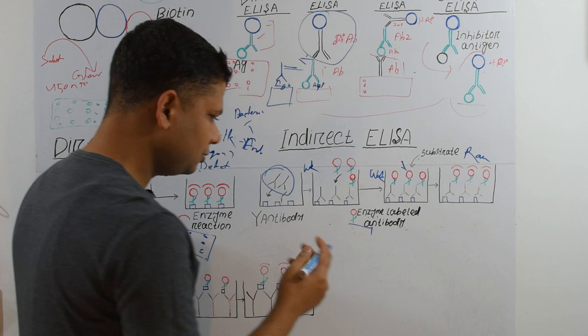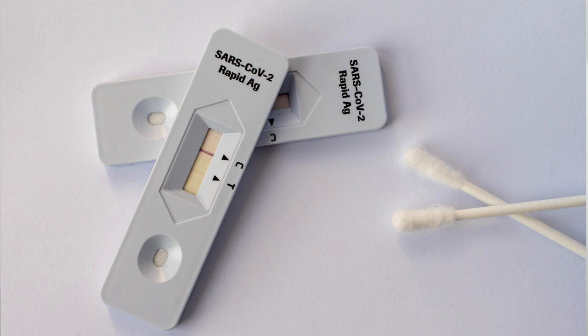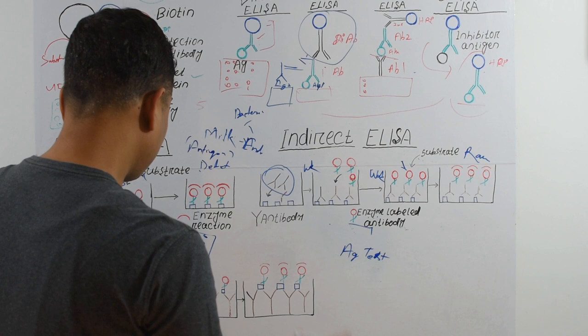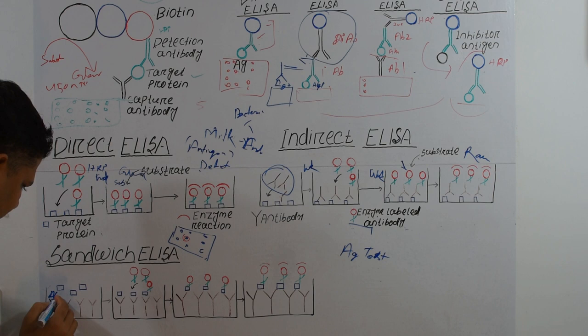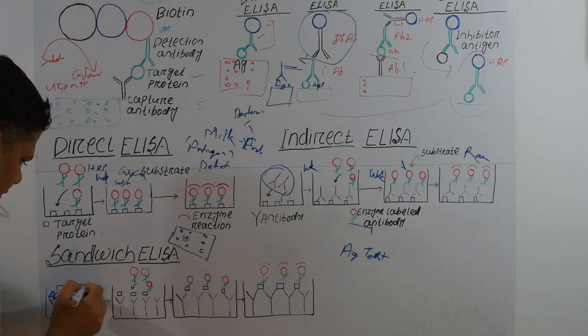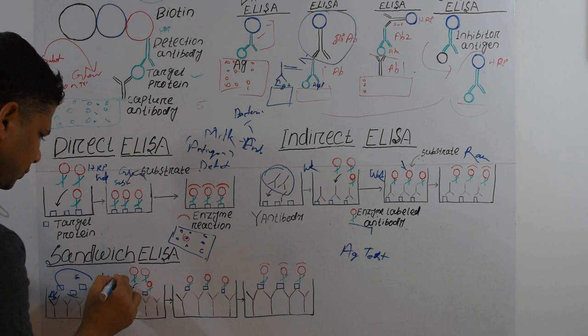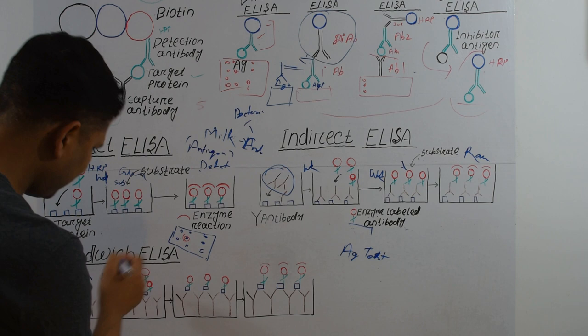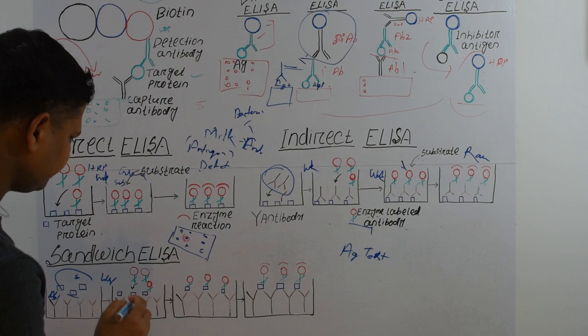In the antigen test we use Sandwich ELISA. First we fix antibody one to the multiwell plate. Then we add different serum samples containing spike protein, and wash to remove all unbound and non-specific antigens. Then we add the secondary antibody conjugated with HRP.